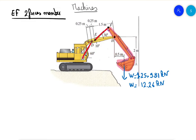We take the shovel plus the front arm as our body. At point H there are two unknown forces Hx and Hy; at EF we have just one unknown force since we know its direction; and at G we have the weight. If we take the moment about H, the weight rotates in the negative direction, so the force EF must rotate in the positive direction to balance it.